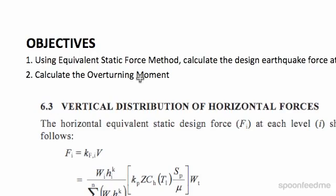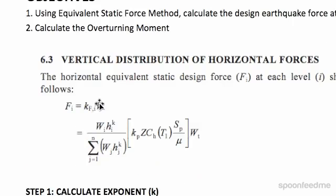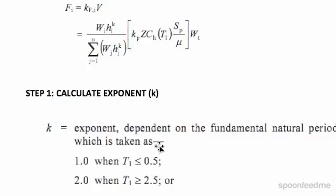For the vertical distribution of horizontal forces, from section 6.3, the horizontal equivalent static force F at each level shall be obtained using this formula. V is the base shear we've already calculated. kfi is this component here, and fi is the force at each level. First up, we're going to calculate the exponent k. That's step one.